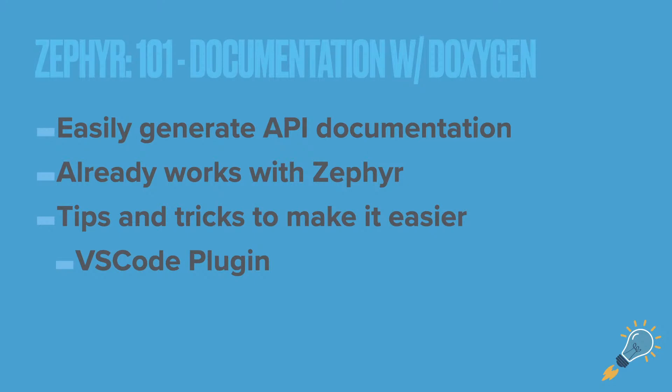So we'll talk about some documentation with Doxygen. It allows you to easily generate API documentation — specifically I've seen it used in C and C++. It already works with Zephyr. Zephyr already uses a Doxygen-esque type documentation setup; I believe they're just using a different theme for Doxygen. And one thing we'll be talking about is tips and tricks for getting it useful for your purposes with Zephyr in particular. VS Code has a plugin you can install that makes it a little bit easier for creating documentation.